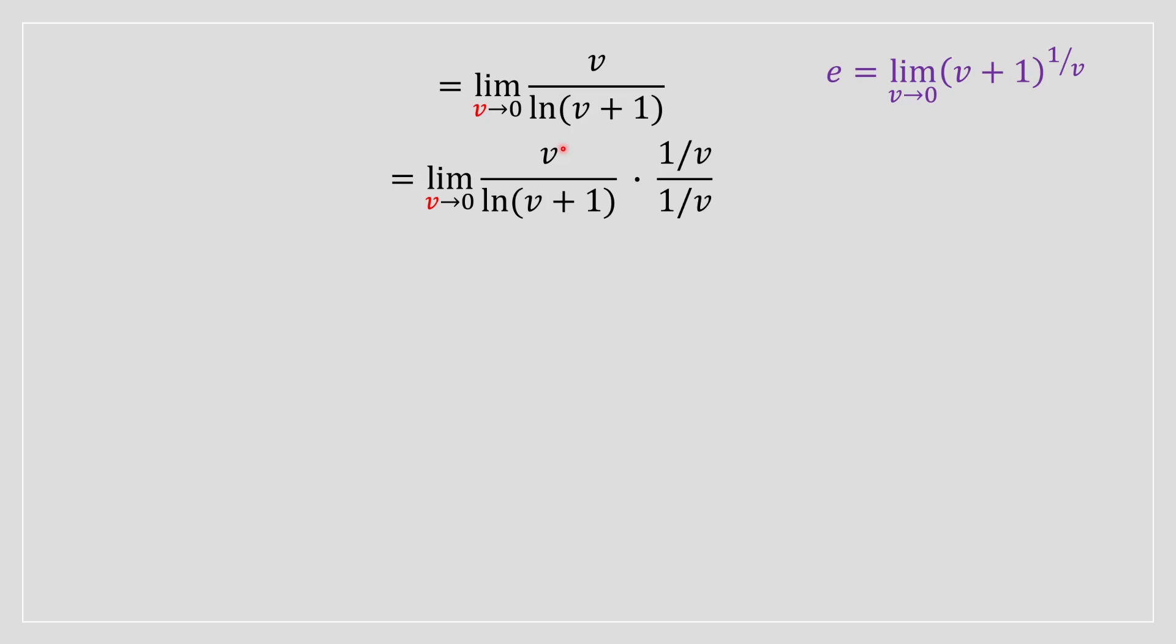We're going to be left with 1 divided by v in the denominator. And using the laws of logarithmic functions, this multiplication we got with 1 divided by v multiplying ln v plus 1, I could move the 1 divided by v as an exponent, essentially. Ultimately, we're going to be ending up with this. And notice it really does resemble this.